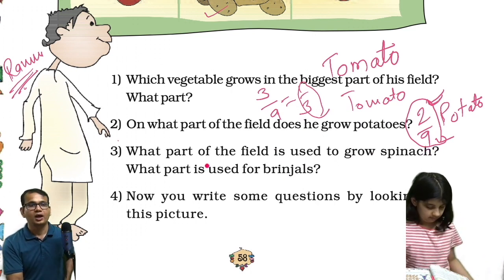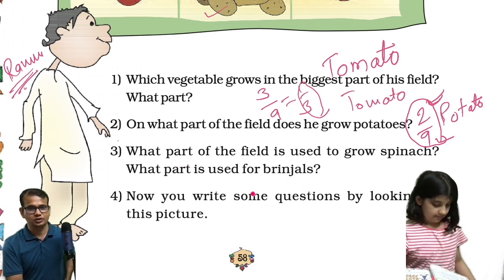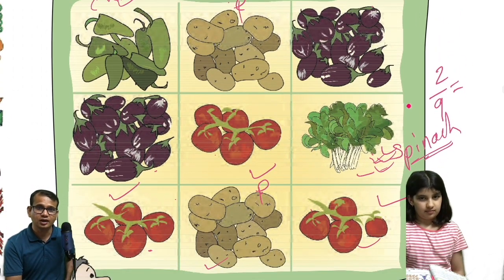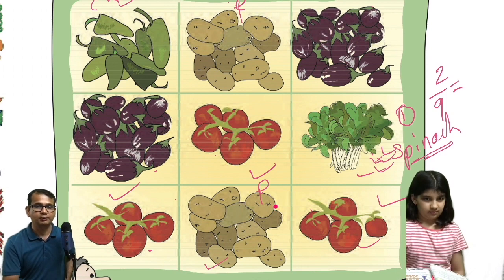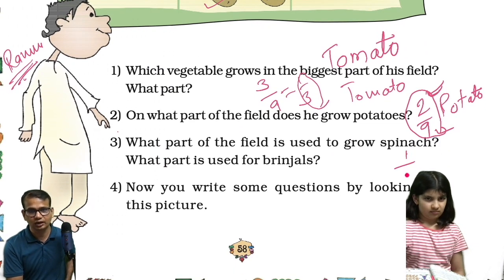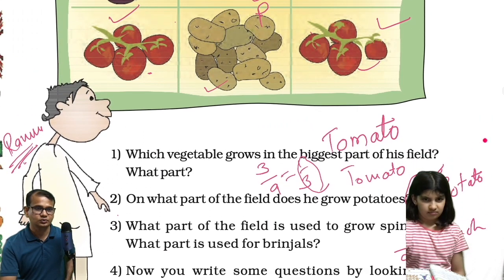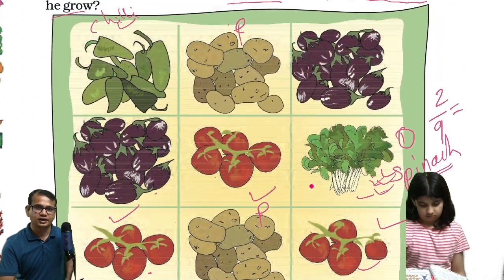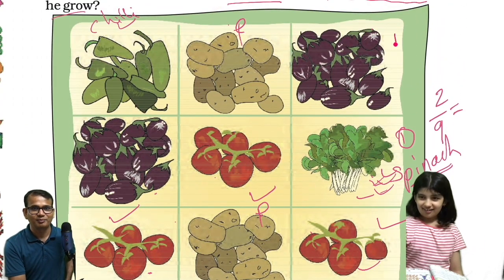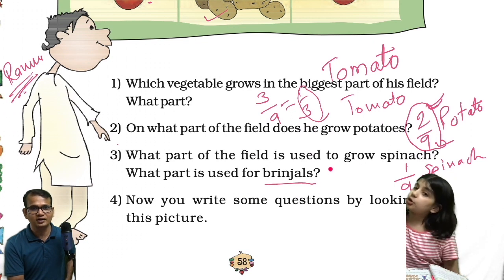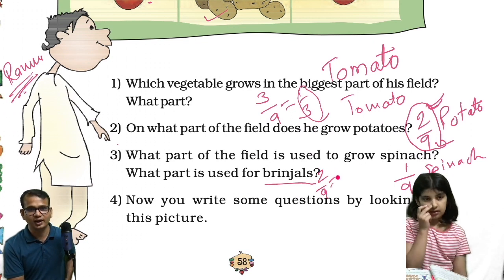What part of the field is used to grow spinach? Spinach is in one part of the field. Total is nine parts, so spinach is one by nine. And then the next question: what part is used for brinjels? Brinjels — two parts here and here, so two parts out of nine. Brinjels are two by nine.